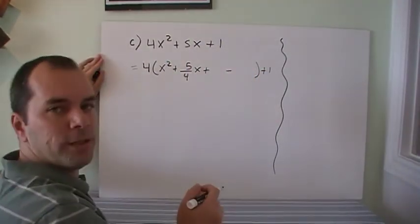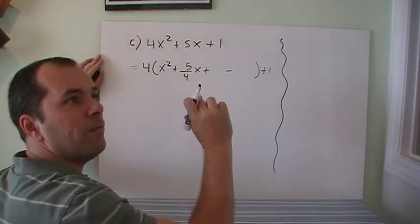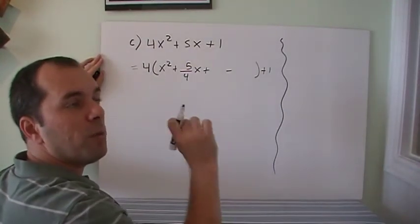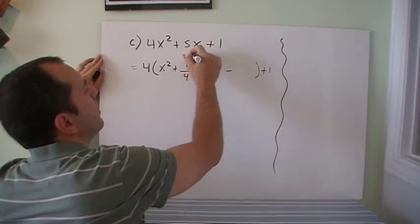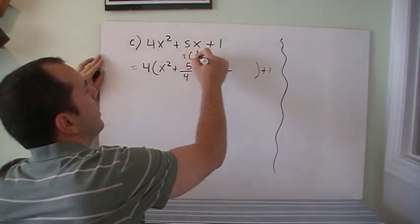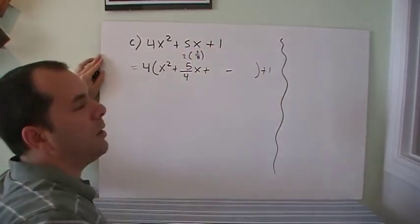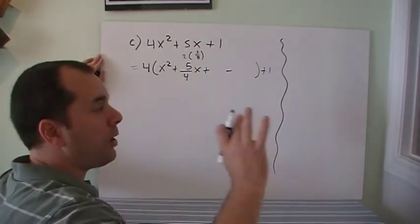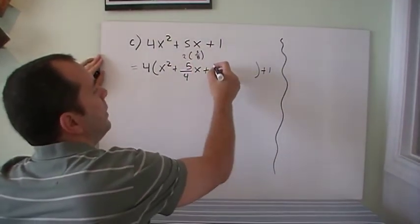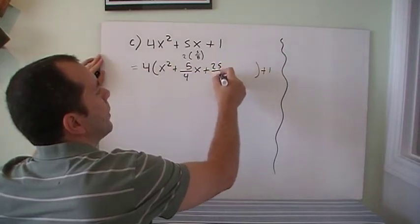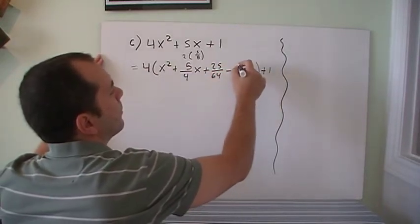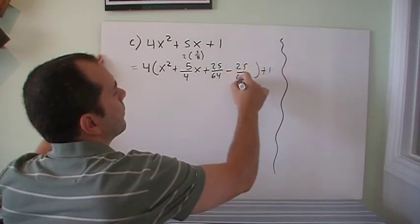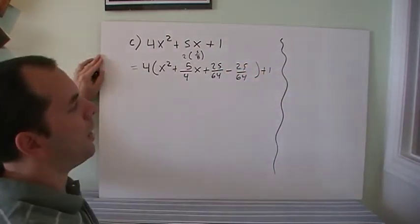Half of 5 fourths is 5 fourths times a half. So you can multiply the bottom by 2. So that's 2 times 5 over 8. I put 5 over 8 on the side, 5 over 8 on the bottom. So that gives me a square. 5 squared is 25. 8 squared is 64.